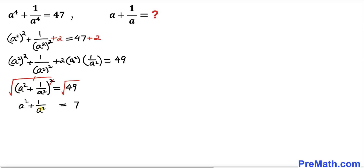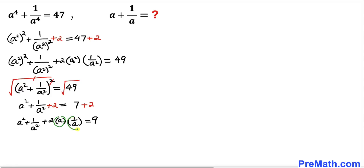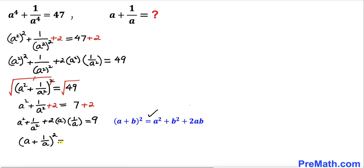Now in this next step we are going to manipulate this equation by adding 2 on both sides again, and complete the square on the left hand side. So this can be written as a squared plus 1 divided by a squared, plus 2 times a times 1 divided by a, equals 7 plus 2, which is 9 on the right hand side. Just keep in mind that a times 1 over a is simply 1. Now let's recall the famous identity a plus b whole squared and apply it on the left hand side.